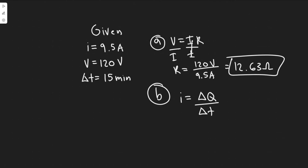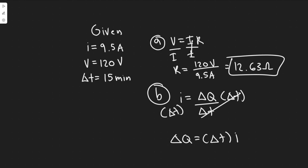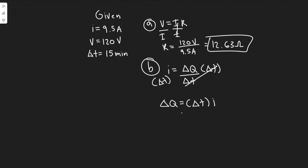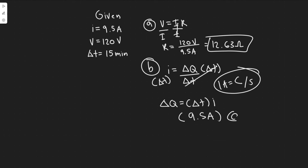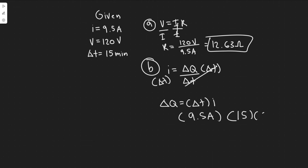If you're ever given current and time, or need to solve for current given charge and time, you'll use this rule. Just multiply both sides by delta T. So the charge equals current multiplied by time: 9.5 amps times delta T. Notice that amps are defined as Coulombs per second, so we need the time in seconds — we can't just use 15 minutes. To convert, there are 60 seconds per minute, so multiply by 60. Now it's in seconds, so we calculate 9.5 times 15 times 60.